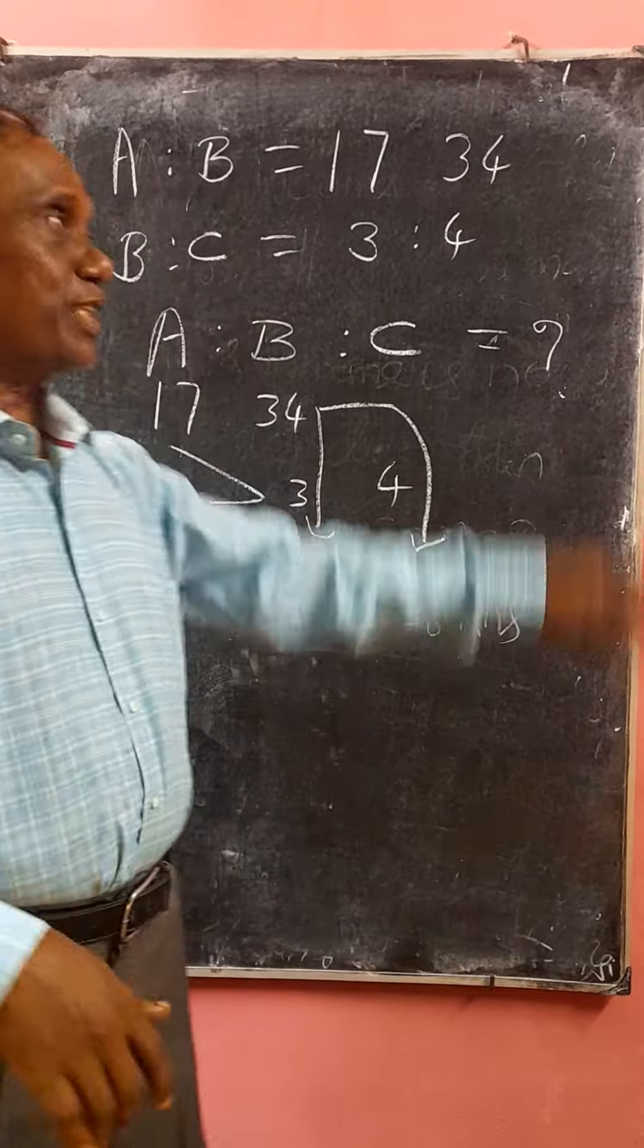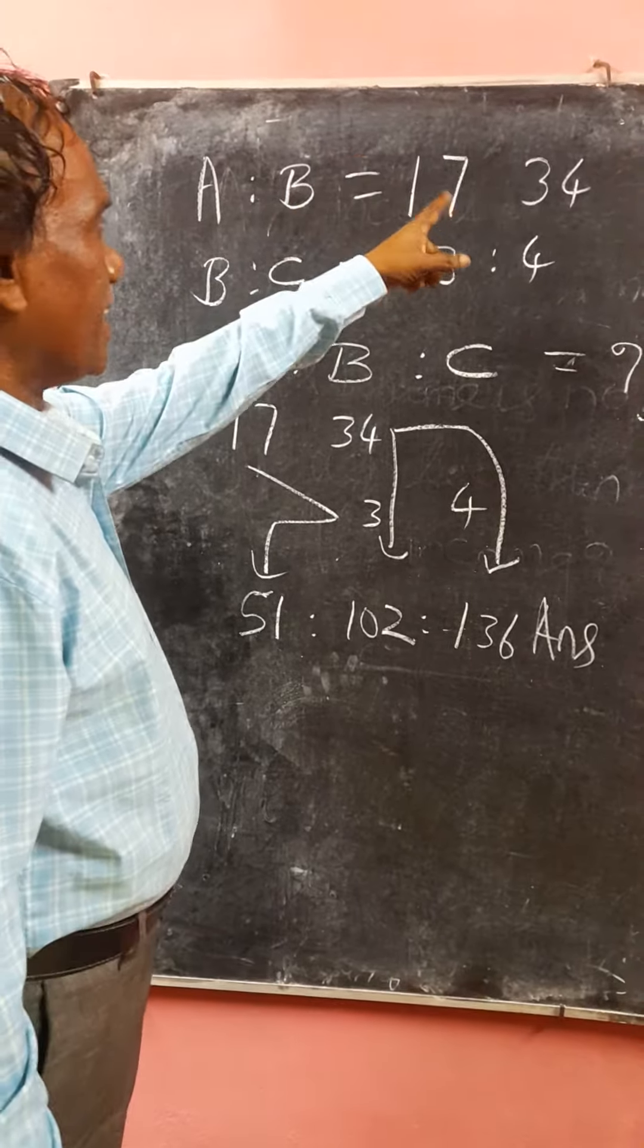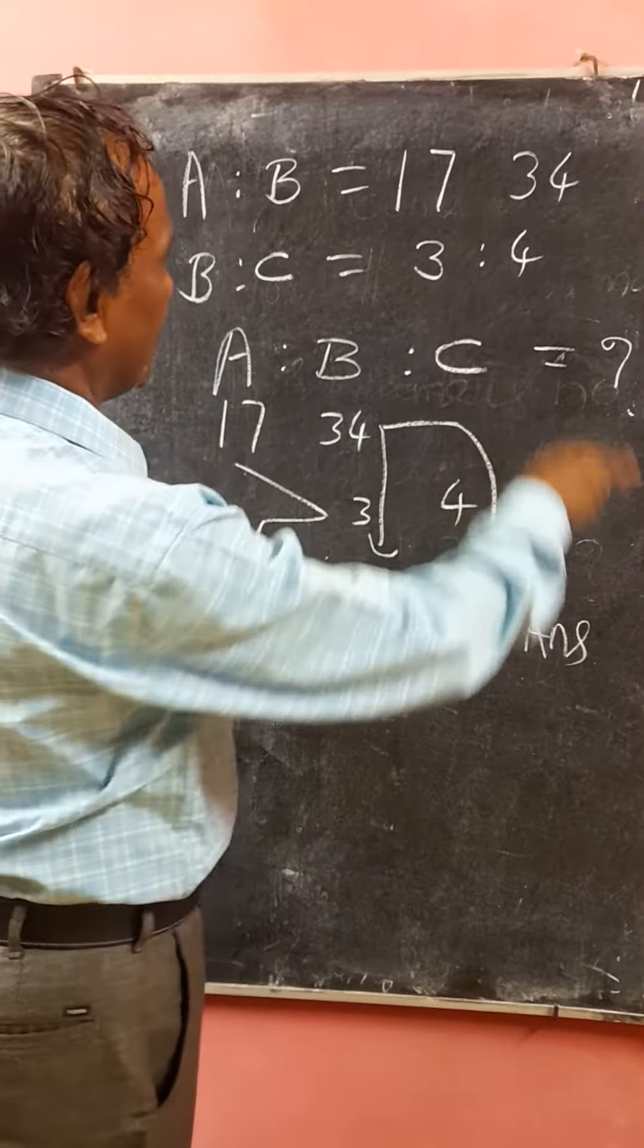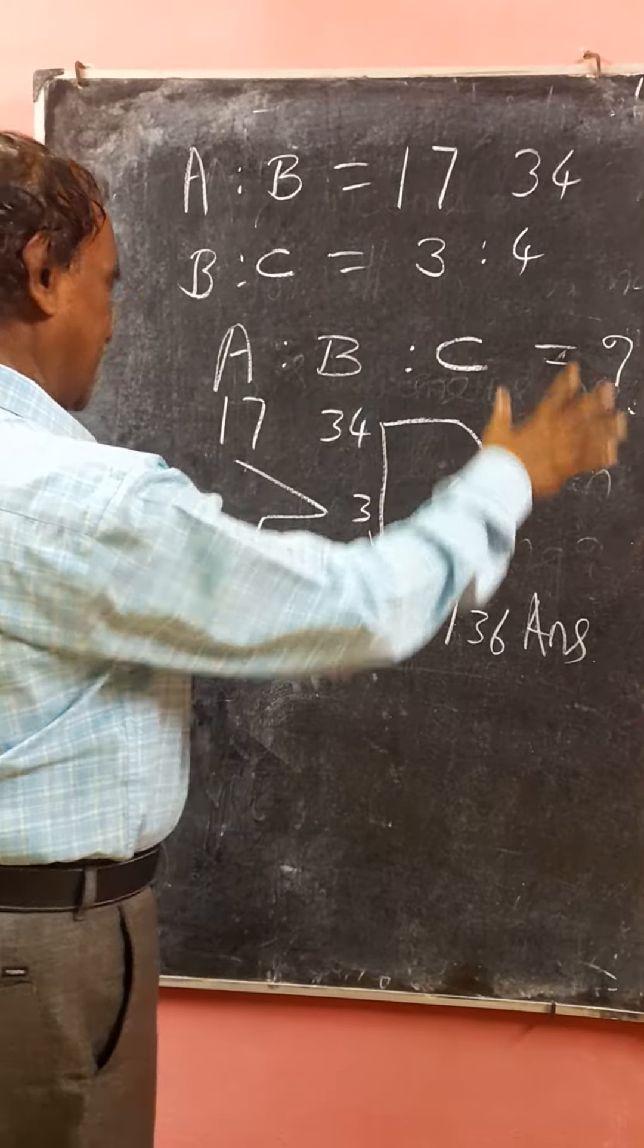Hi friends. Fantastic question. A is to B as 17 is to 34. B is to C as 3 is to 4. Find out A is to B is to C.